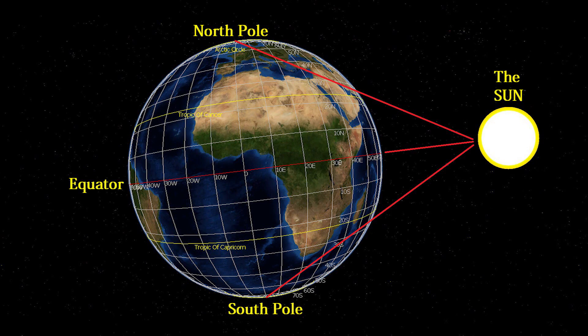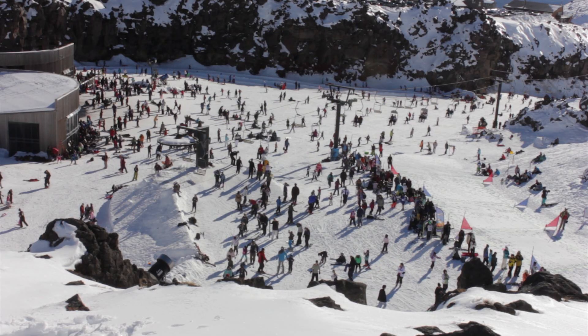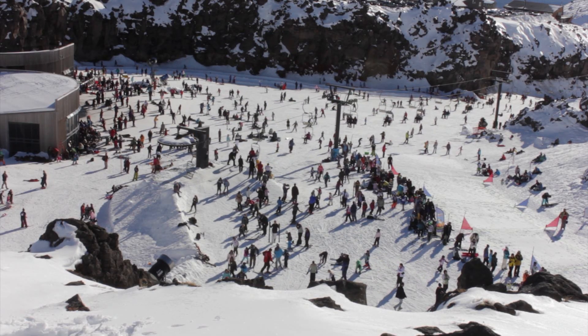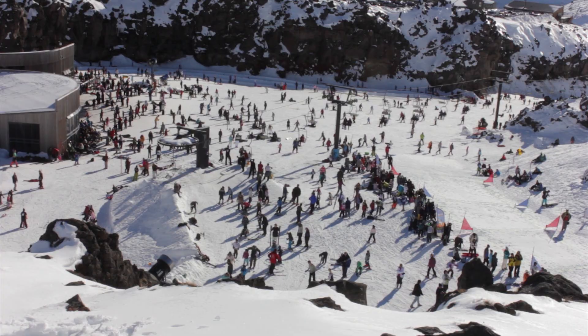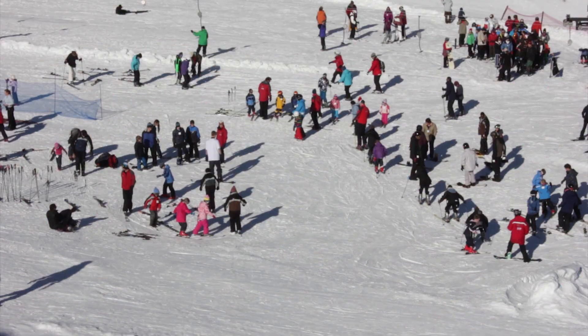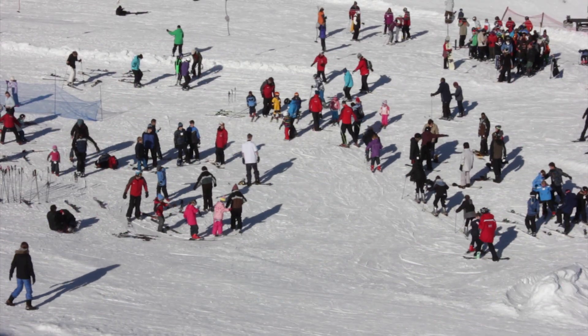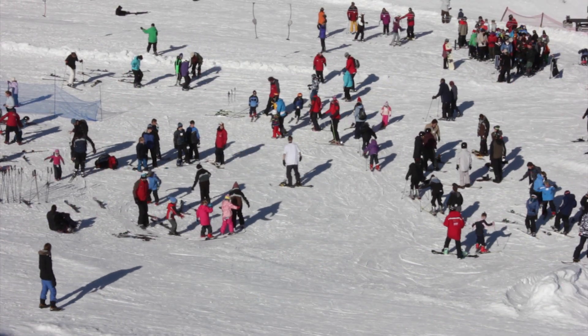Because the earth is spherical, this solar energy diminishes as you move further north or south of the equator. Regions closer to the poles have four seasons and very cold winters.